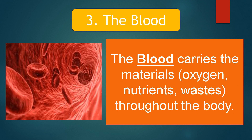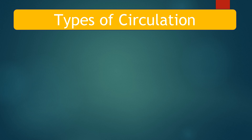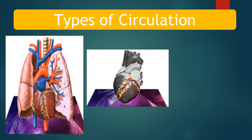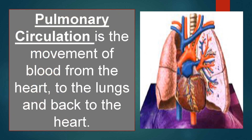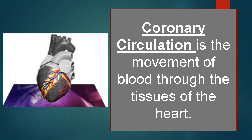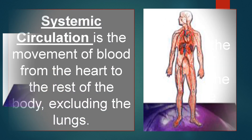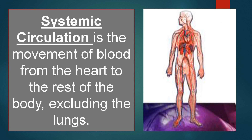The third major part is the blood. The blood carries materials such as oxygen and nutrients throughout the body. Now let us talk about the types of circulation. Pulmonary circulation is the movement of blood from the heart to the lungs and back to the heart. And lastly, systemic circulation is the movement of blood from the heart to the rest of the body except the lungs.